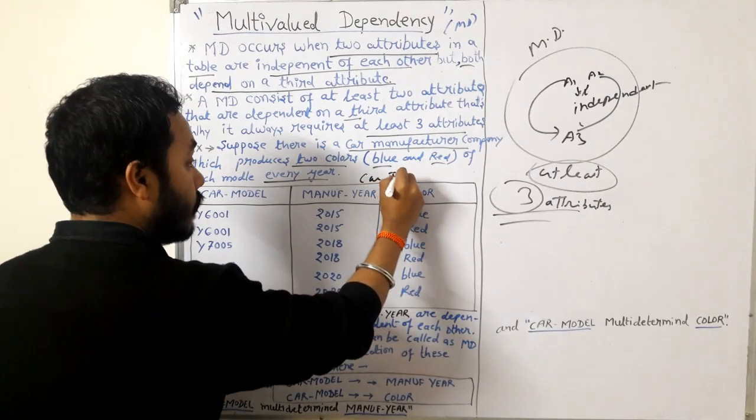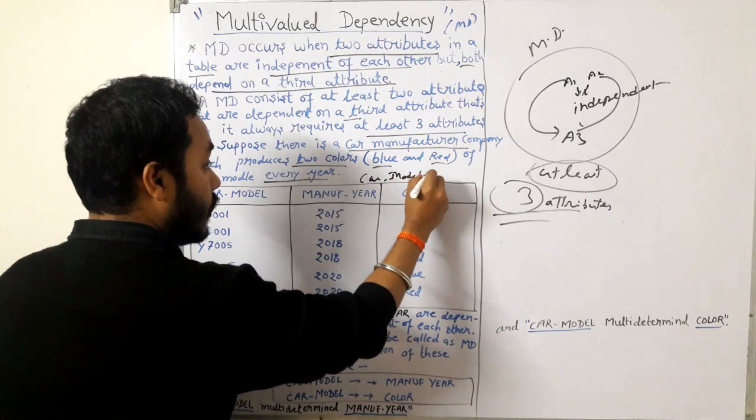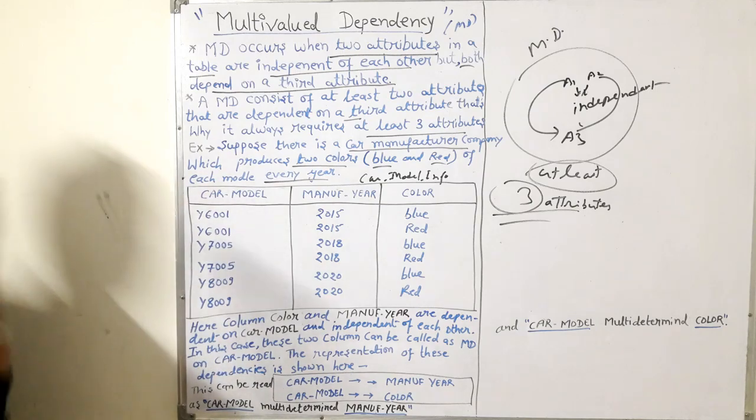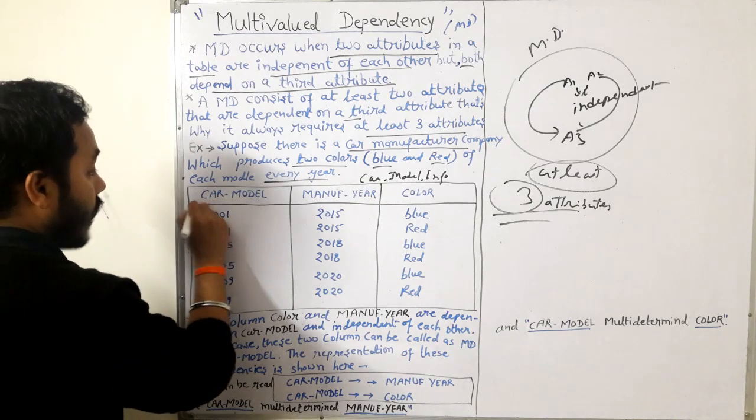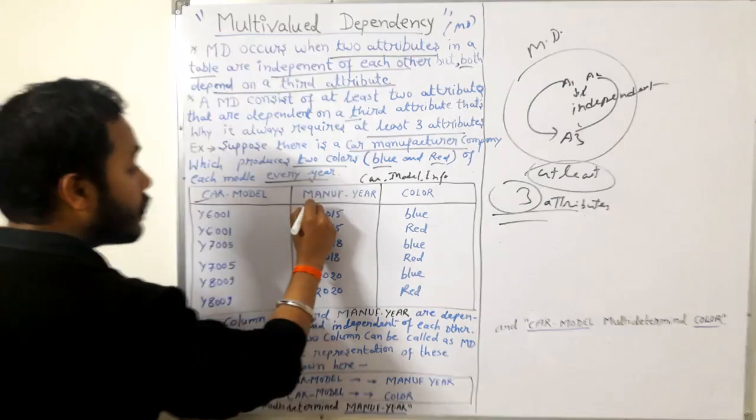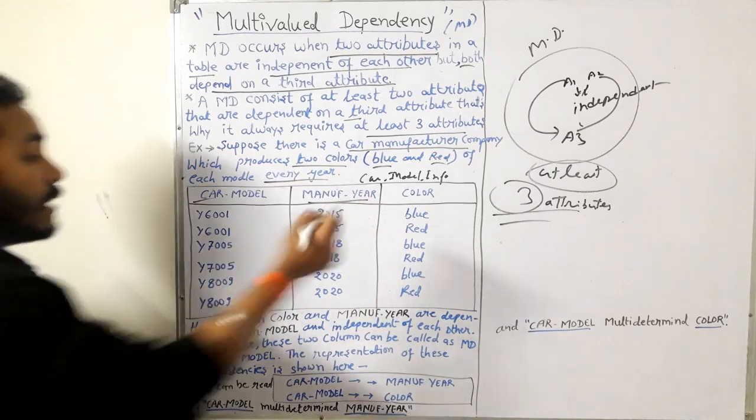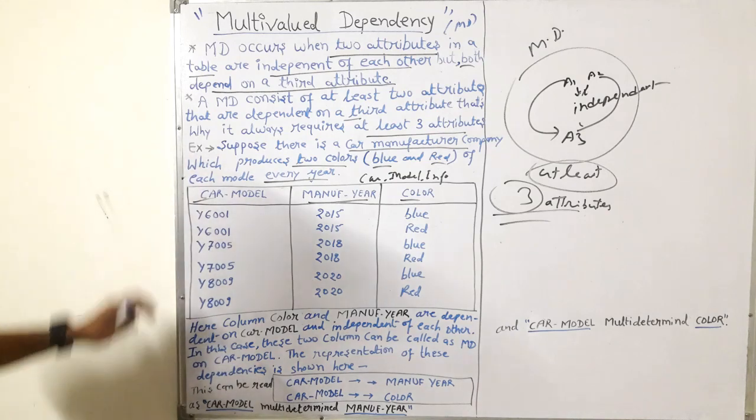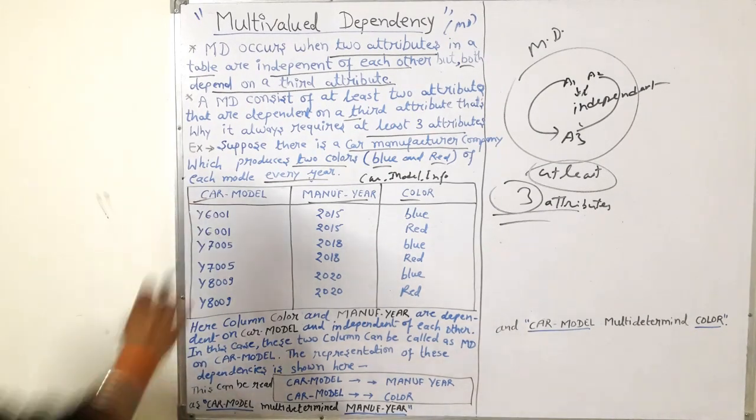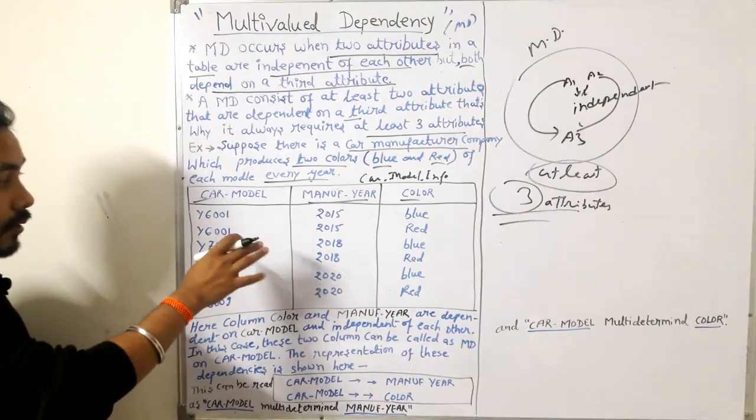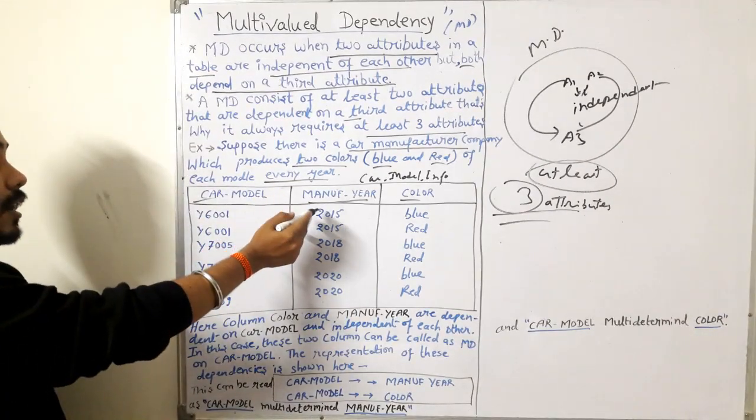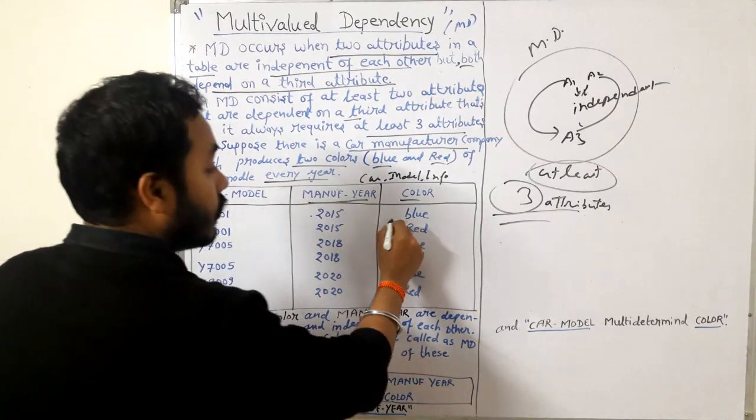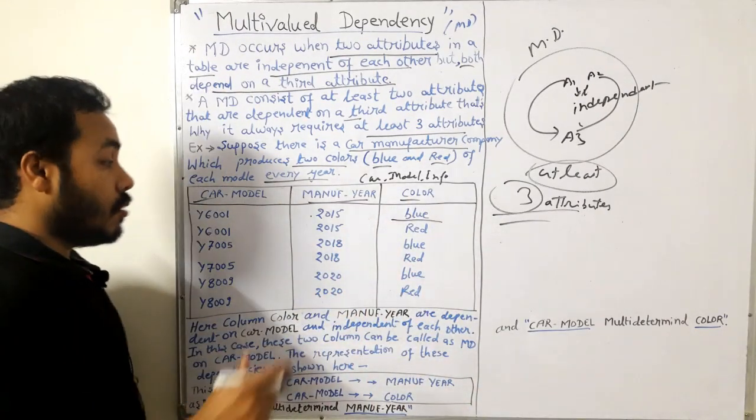In this relation I am giving the title of the table as car model info. Let's consider this table. Here we have three attributes: first is car model, second is manufacturer year, and third is color. In the car model we have Y6001, manufactured in 2015, and the color for that model is blue and red.